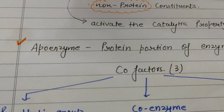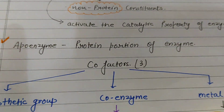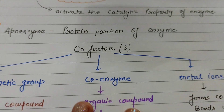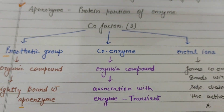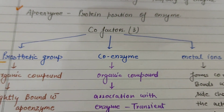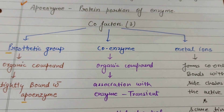Remember that 'Apo' has the letter P, so P stands for protein. After that, we come to co-factors. We have differentiated co-factors here into three kinds.